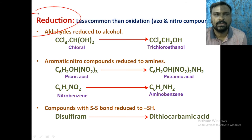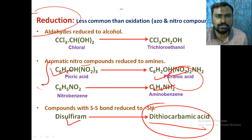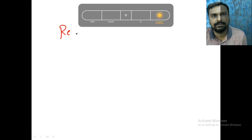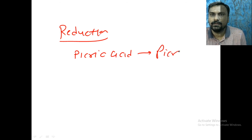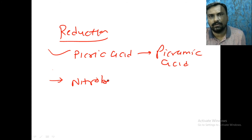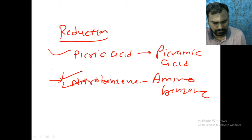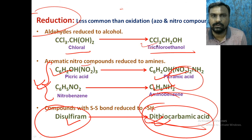Now, reduction reactions in phase 1. A very important example is picric acid converted to picramic acid — they are converted to amine, aminophenol. Nitrobenzene is converted to aminobenzene. Disulfiram is reduced to diethiodithiocarbamic acid. Chloral is converted to trichloroethanol. At least the examples of picric acid to picramic acid and nitrobenzene to aminobenzene you should remember.